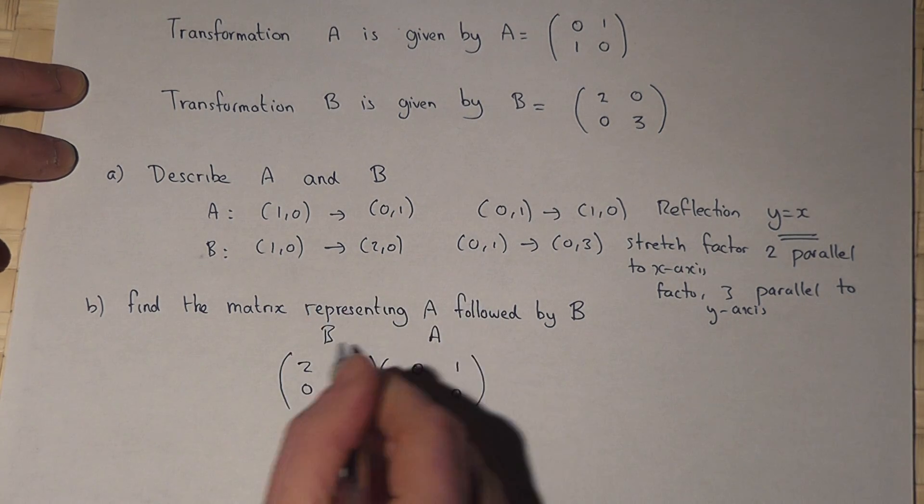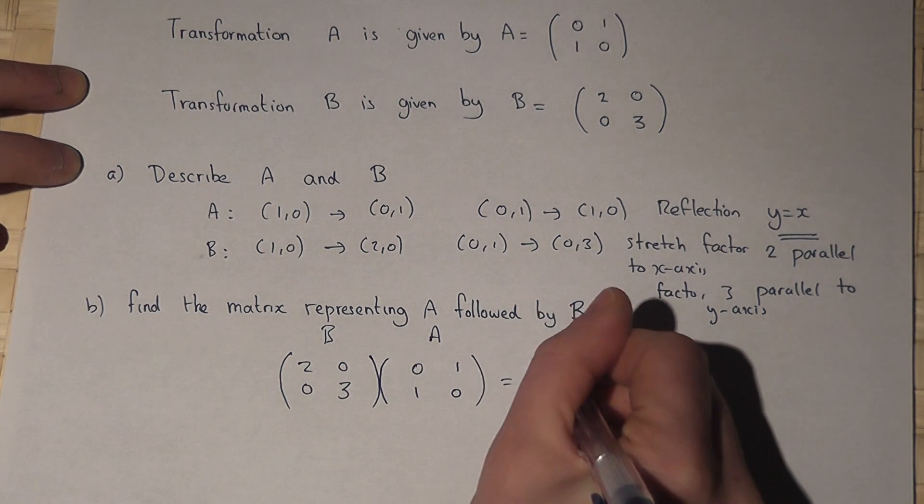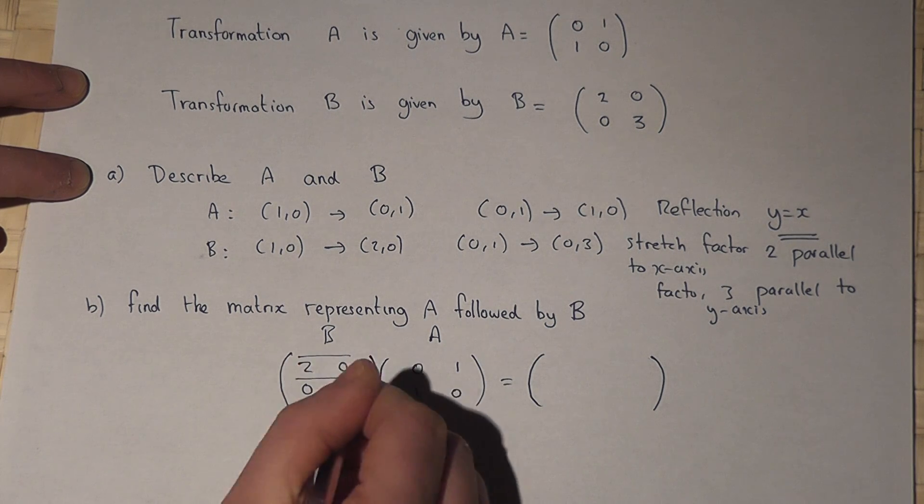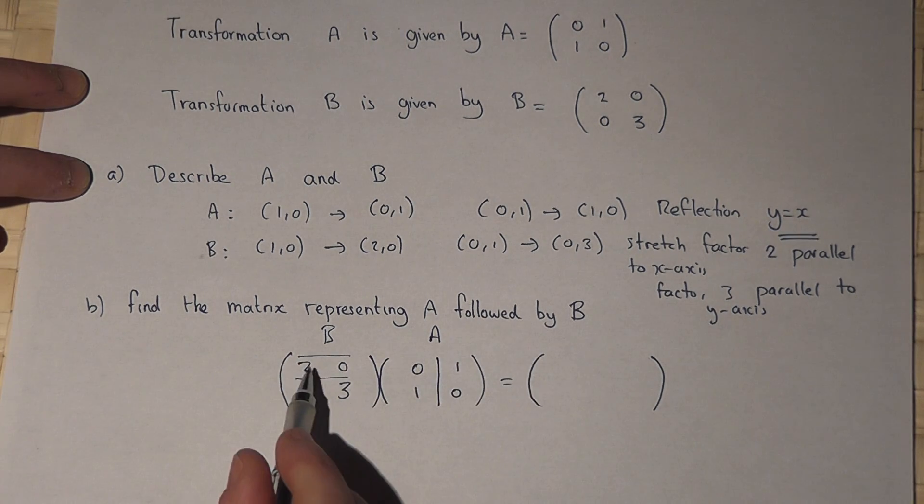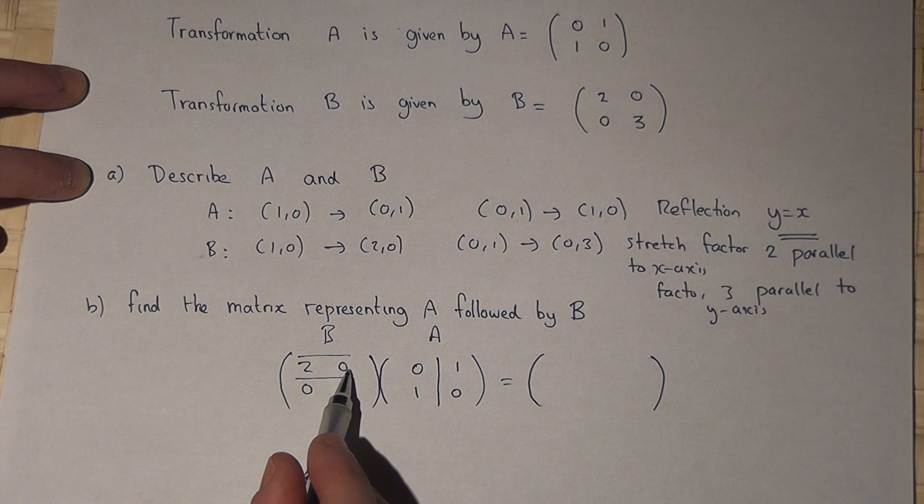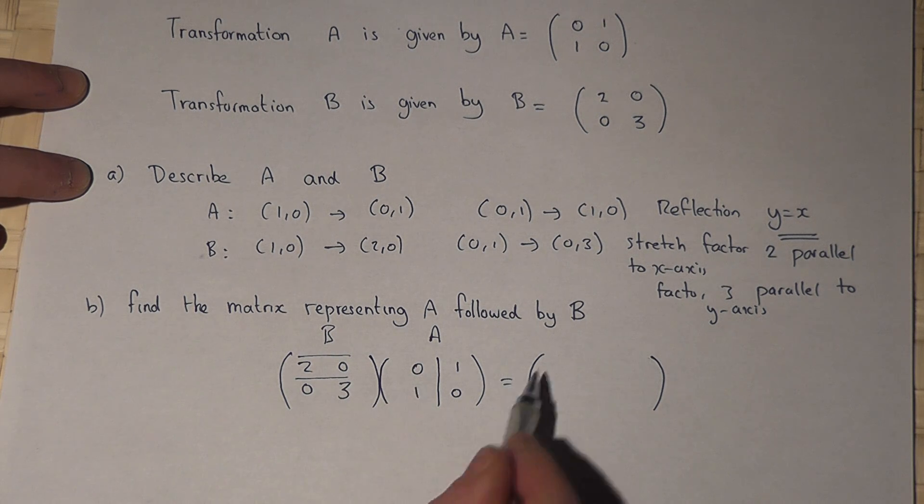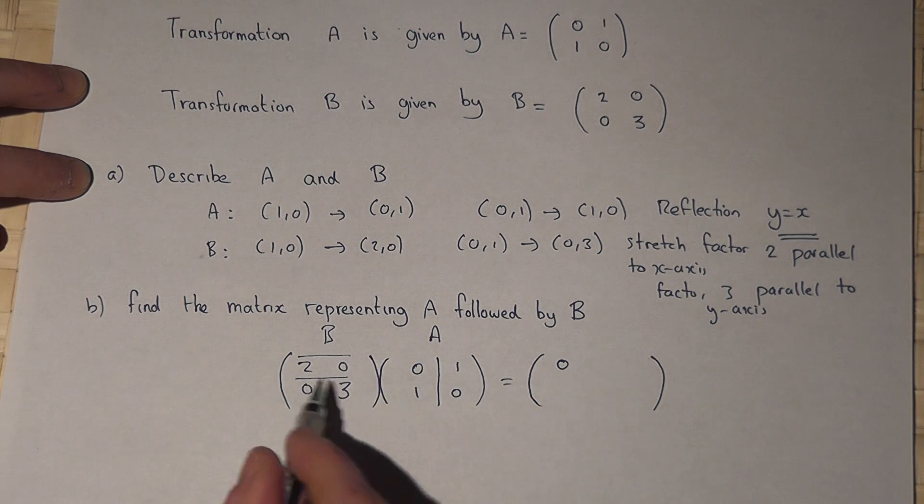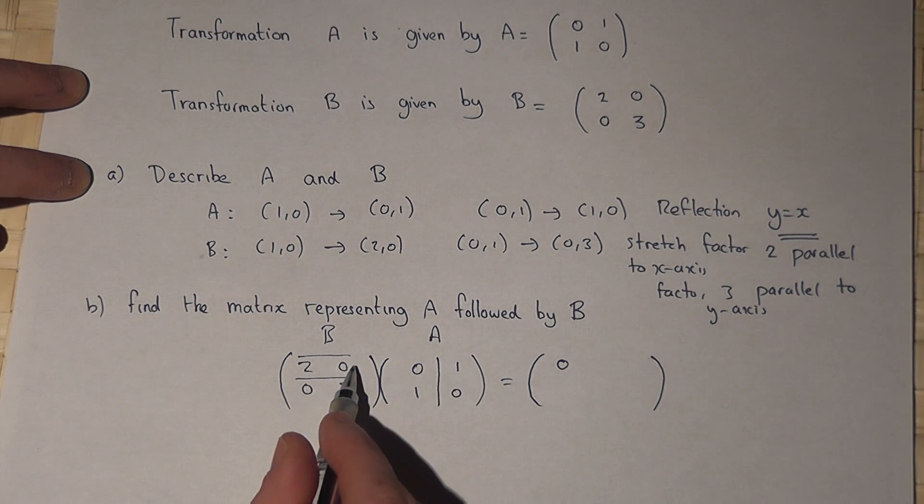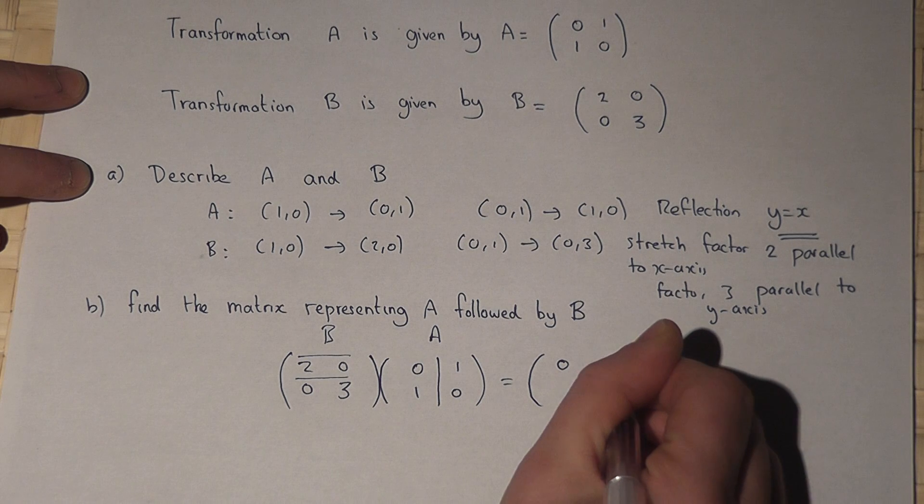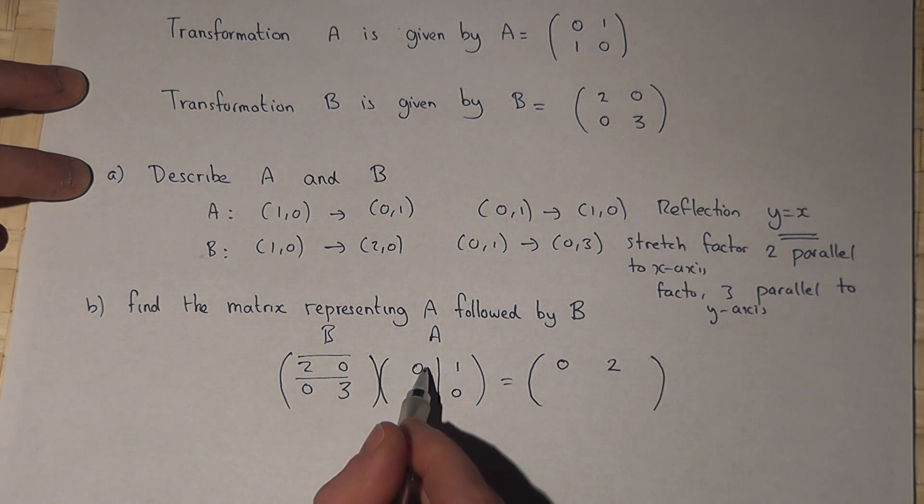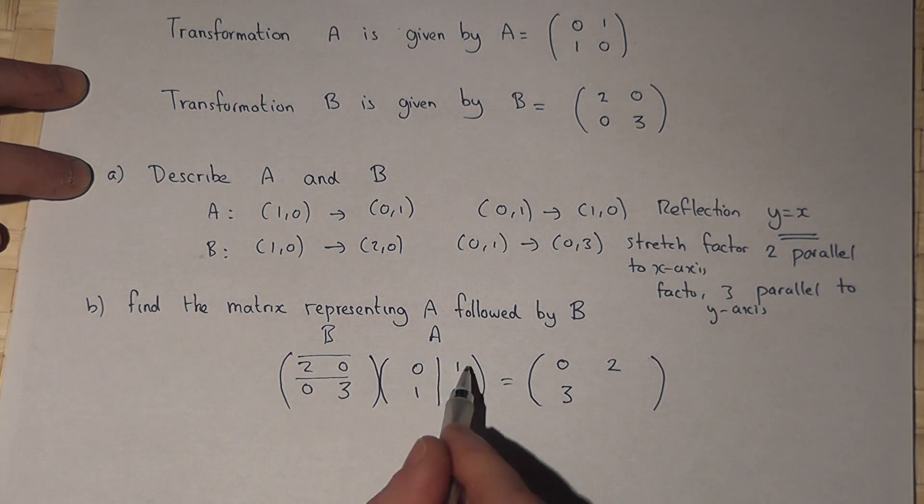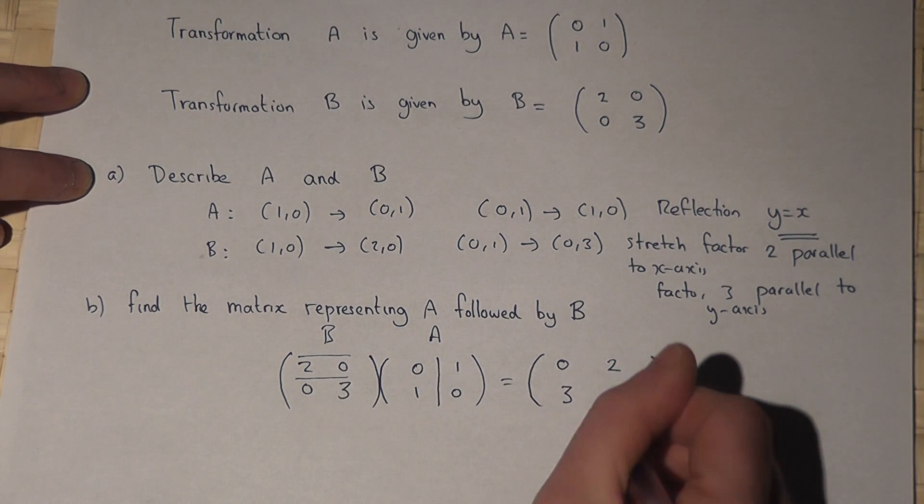A happens and then B happens, so we work out what this is times together. 2 times 0 plus 0 times 1 gives us the top left which is 0. The top right, 2 times 1 plus 0 times 0, is 2.